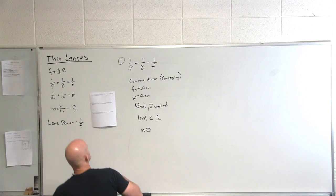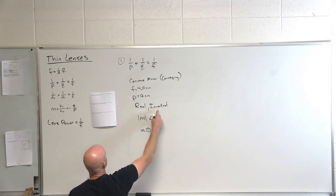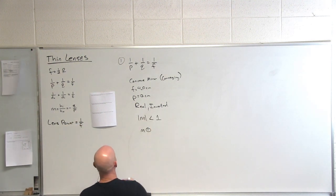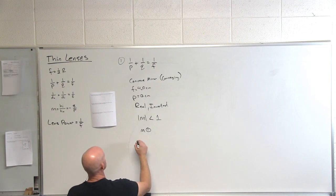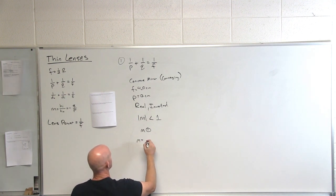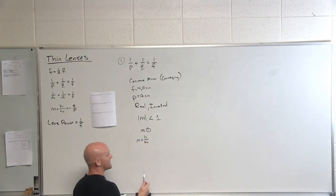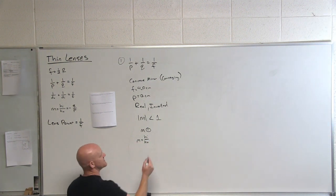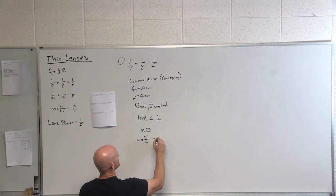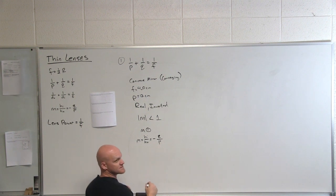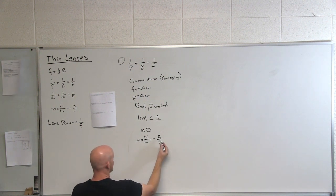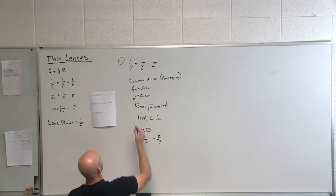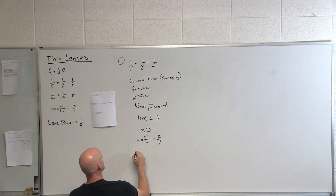We've already figured out qualitatively that it's real and inverted. Now let's do the math. Your magnification equals the height of the image over the height of the object, but we don't know those. It's also equal to the negative of the image distance over the object distance. So my goal is to find the image distance using the thin mirror and lens equation. We are 12 centimeters away.